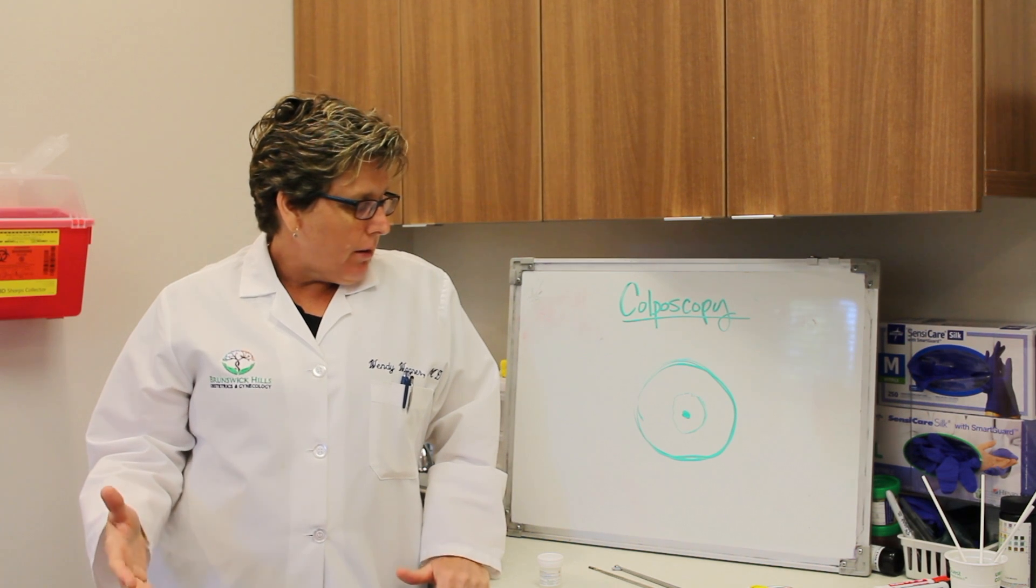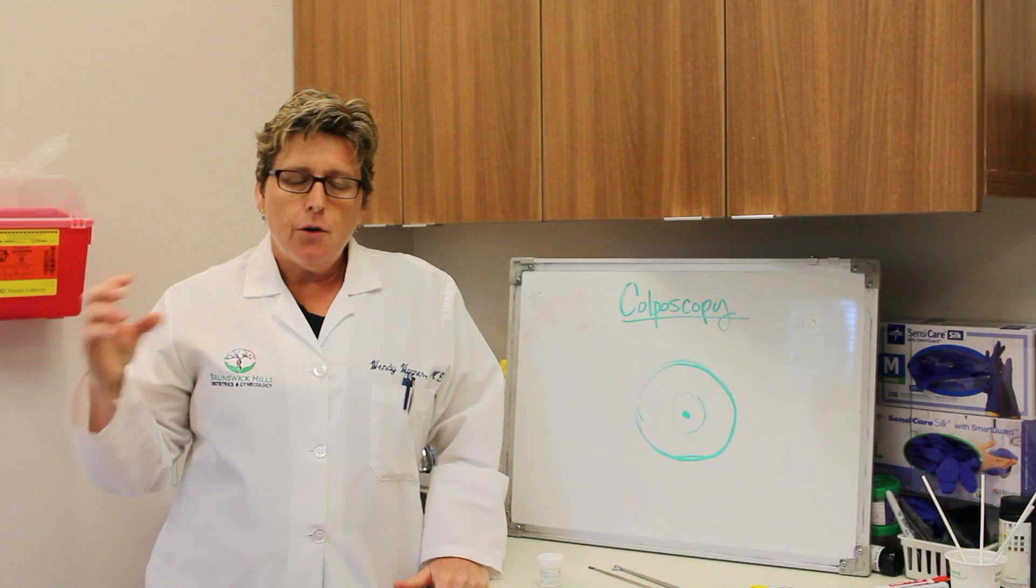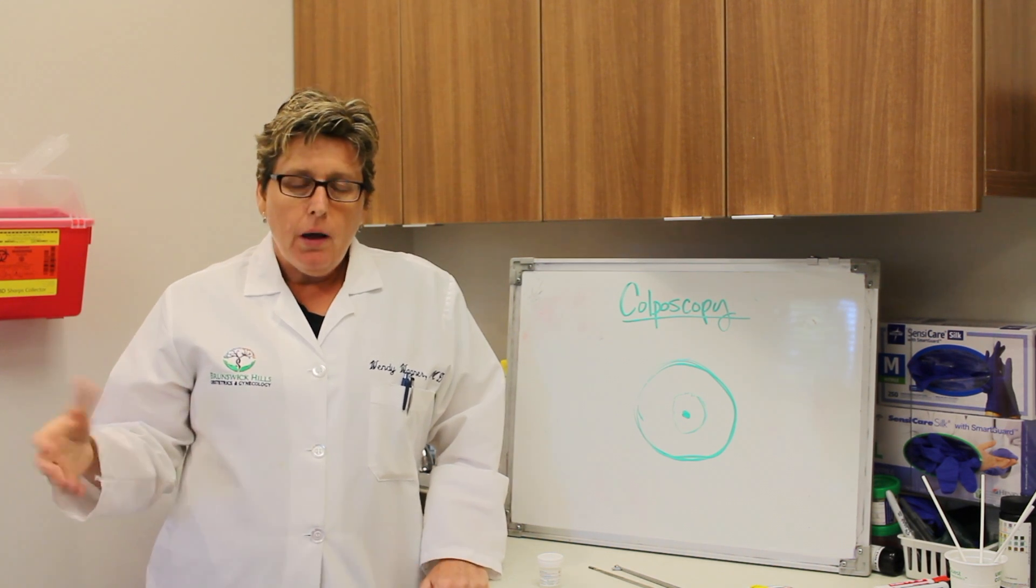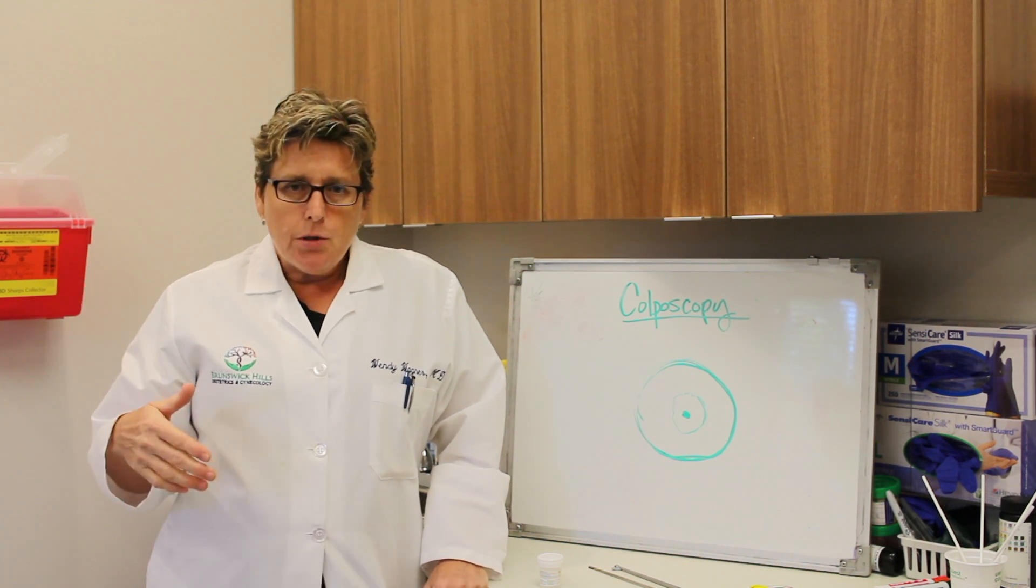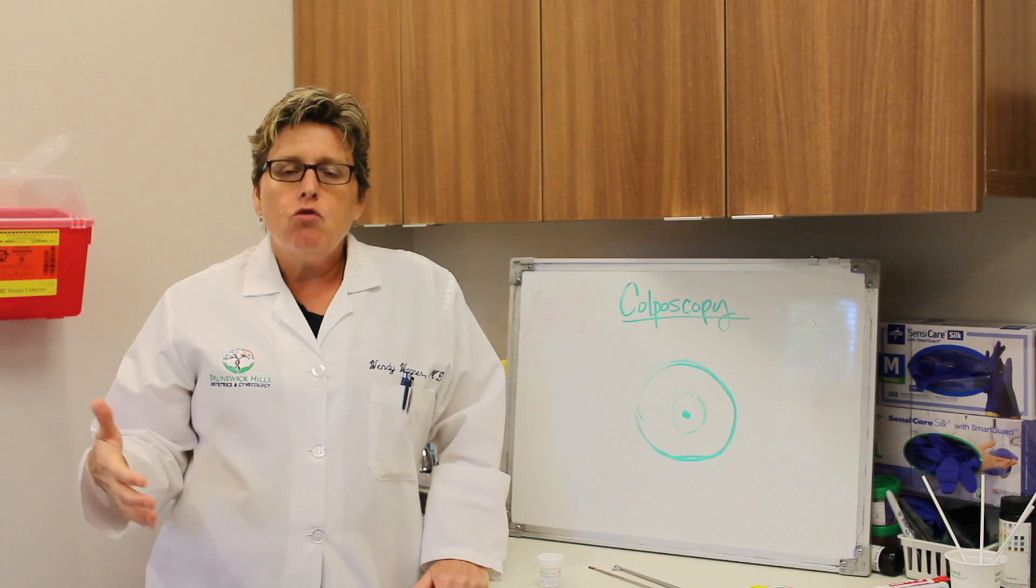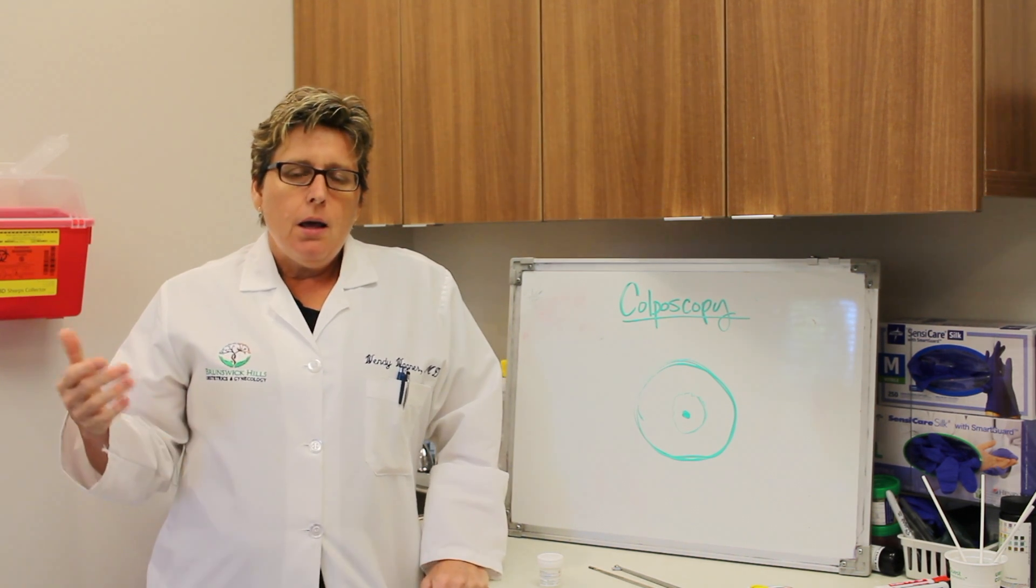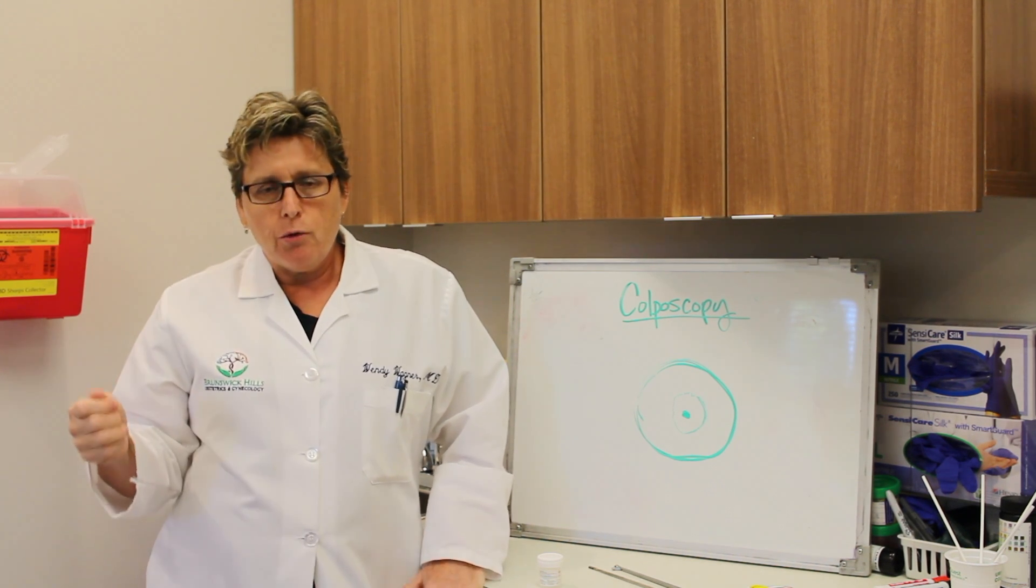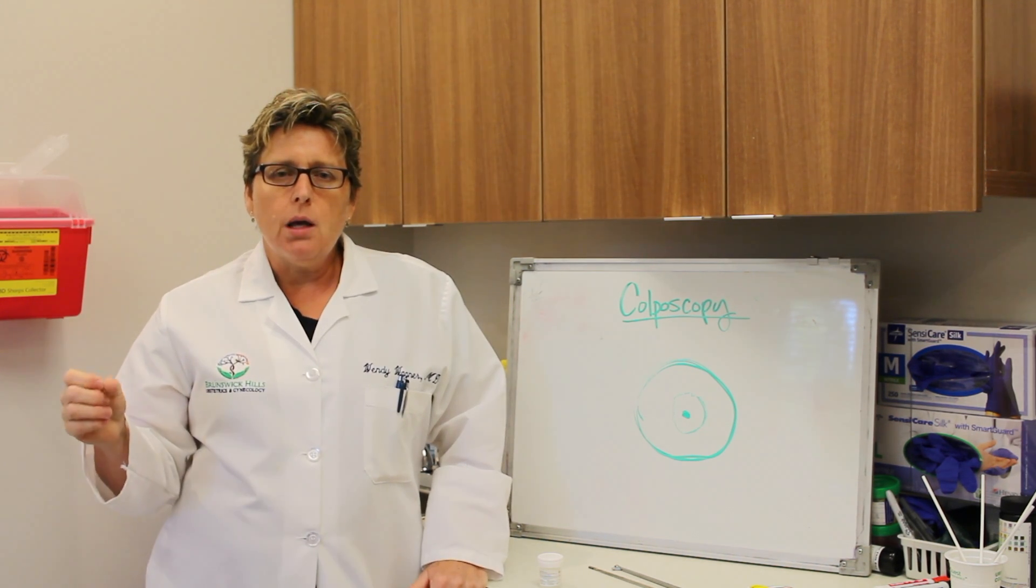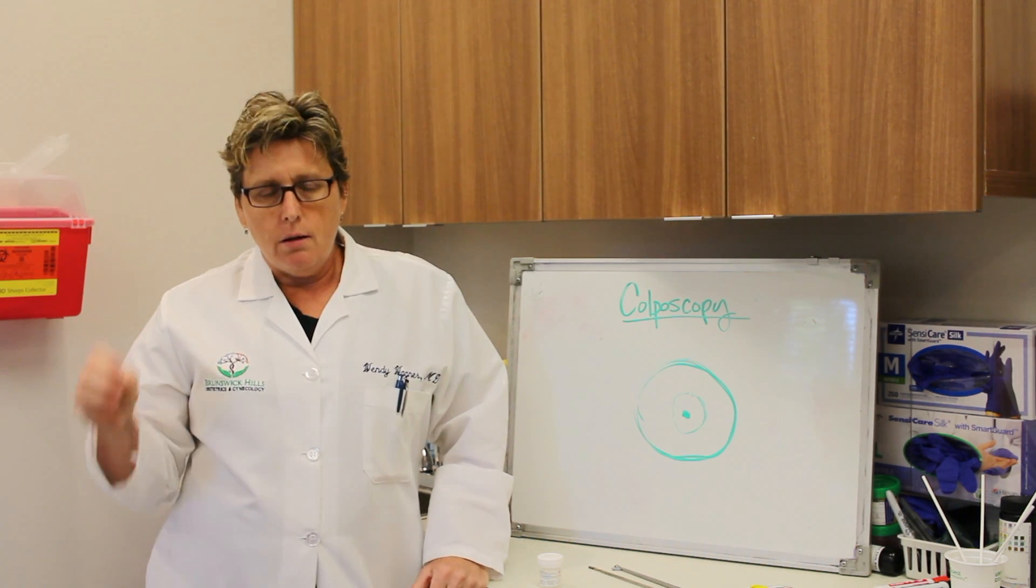What a colposcopy is, is looking more closely at the cervix under magnification with a colposcope. We'll look at the colposcope in a minute, and discuss taking biopsies of the cervix and making sure that there's not anything worse going on than what showed in your pap smear. A pap smear is a screening test, just kind of blindly taking cells from the surface of the cervix, where a colposcopy is making a determination of exactly what's going on in the tissue.